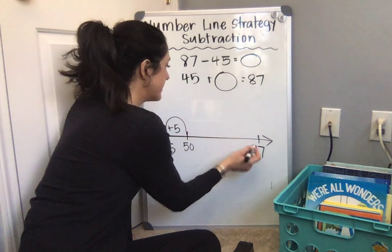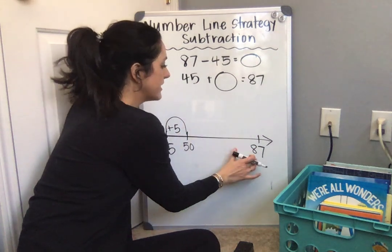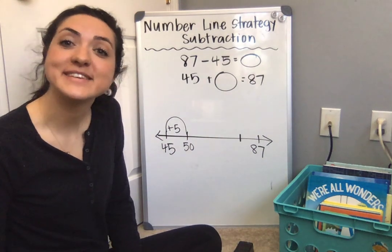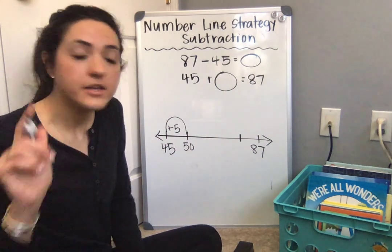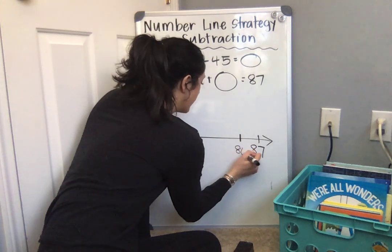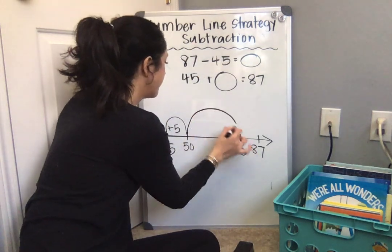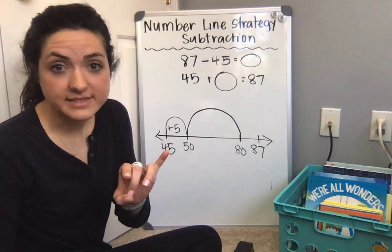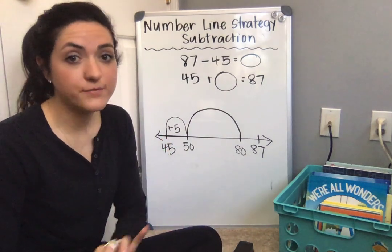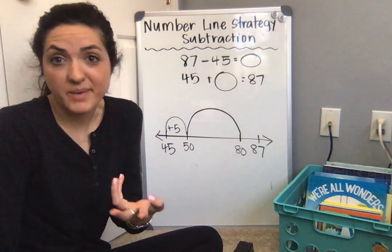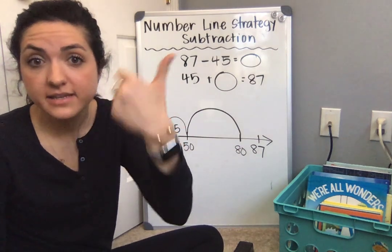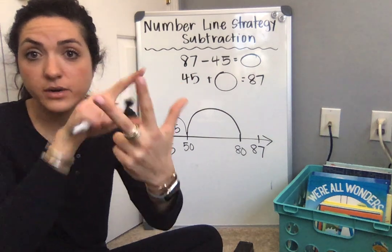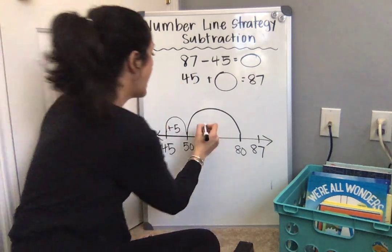Now I want to jump up to the closest friendly number to 87. It's going to be right here. Do you know what it is? I'll give you a second to think. You're right, it's 80. So I want to jump from 50 to 80. Now, I can jump counting by tens because I'm at friendly numbers, right? So 50 plus how many tens gets me to 80? Well, let's count by tens: 50, 60, 70, 80. I counted 1, 2, 3 tens, or 10, 20, 30. So I added 30.